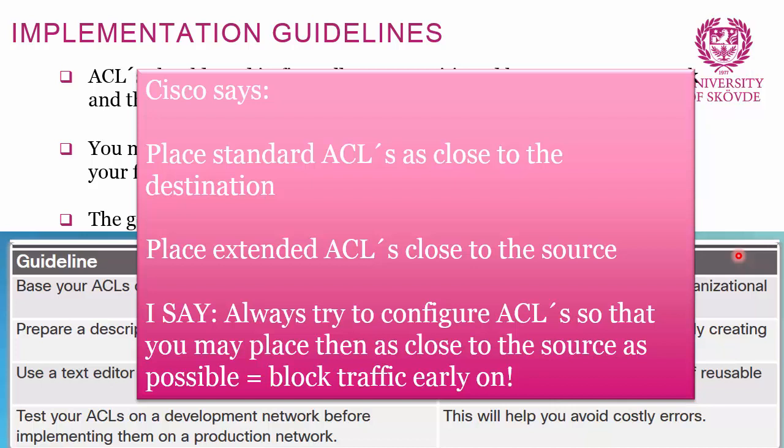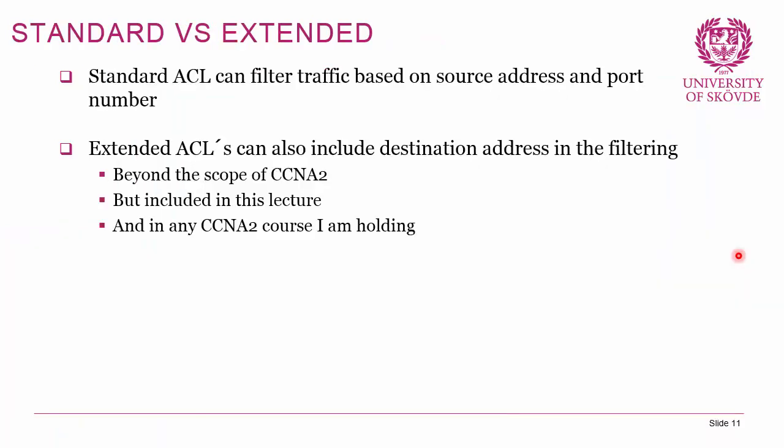There is an important distinction between standard and extended ACLs. Cisco recommends placing standard ACLs as close to the destination as possible, and extended ACLs as close to the source as possible. Standard ACLs can filter traffic based on source address only. Extended ACLs can also include destination addresses and port numbers in the filtering.